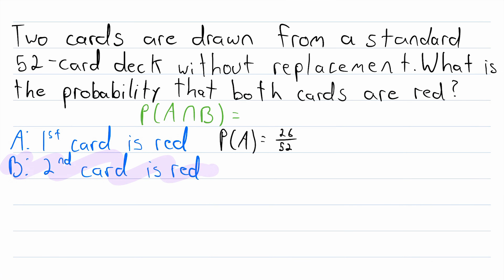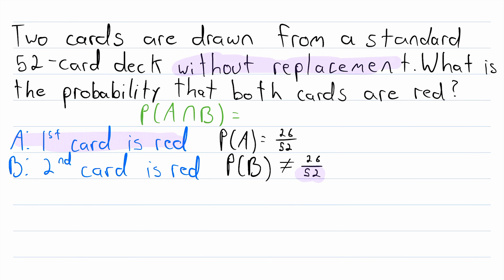The more difficult question is: what is the probability of B? This is more difficult because we're not dealing with independent events anymore — the probability of B depends on whether or not A occurred. We know that the probability of B can't just be equal to 26 over 52 like A is, because there are no longer 52 cards in the deck, since the first card was already drawn without replacement, which means it wasn't put back in. So now there are 51 cards in the deck.